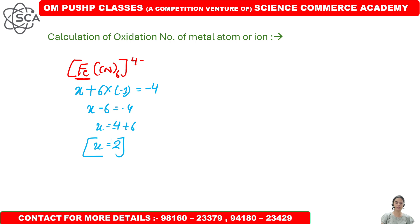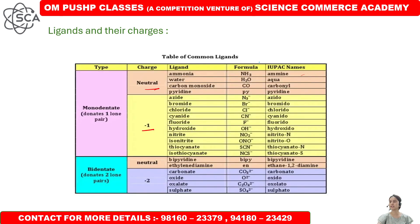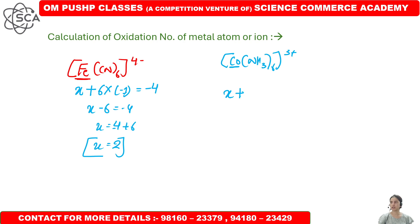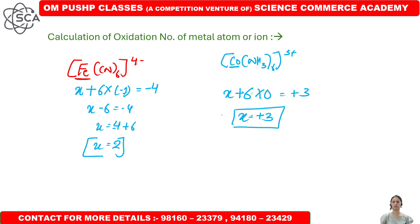Let's take another example: Co(NH3)6 with a 3 positive charge. We have to calculate the oxidation state of cobalt. NH3 is a neutral ligand, so its charge is 0. So: x + 6×0 = +3, which gives x = +3. The oxidation number of cobalt is plus 3. Simple as that.